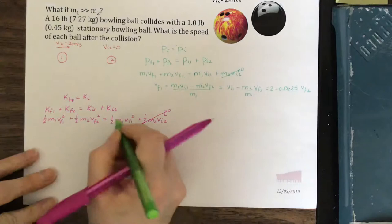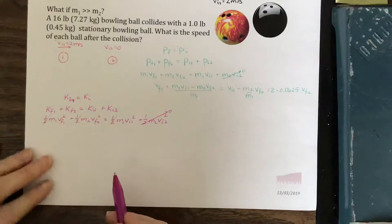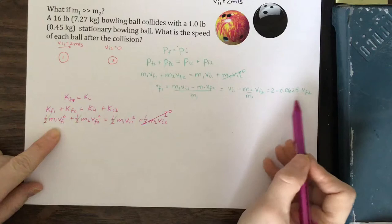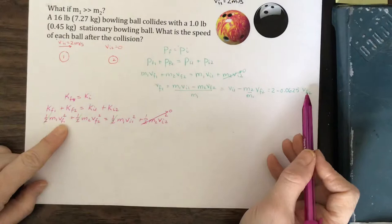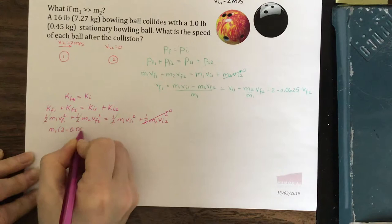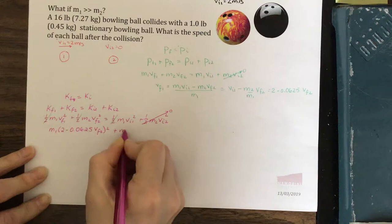Divide both sides by 1 half and our 1 half's cancel. And now let's see where we can go. Here we have v final 1. We know that this expression is v final 1, so we'll substitute this expression right here. Then we'll see if we can find those final speeds. So m1 outside of 2 minus 0.0625 v final 2 squared plus m2 v final 2 squared equals m1 v initial 1 squared.